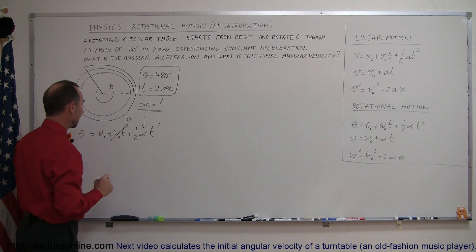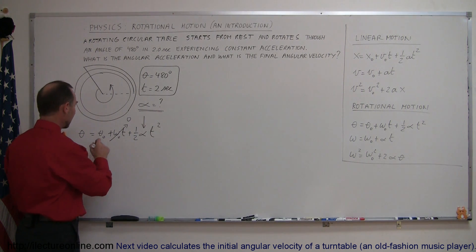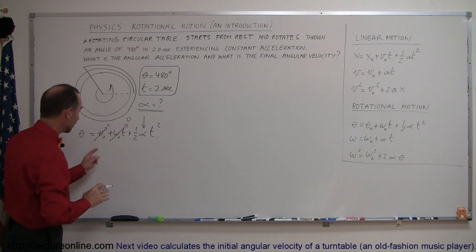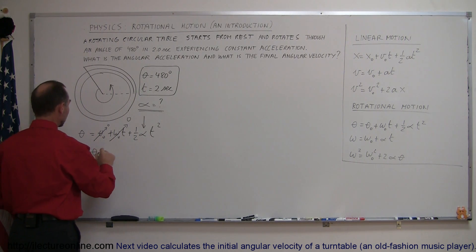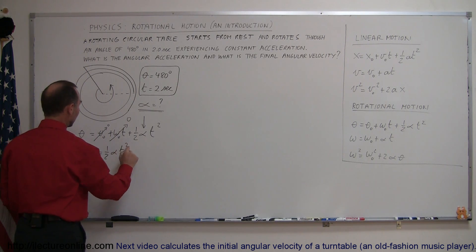So there's no angular velocity at t equals zero, so that disappears. We can assume we have not covered any angle yet, so the initial angle is also zero. We end up with theta equals one-half alpha times t squared.